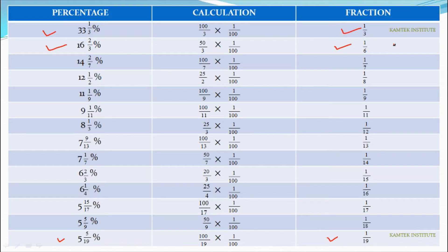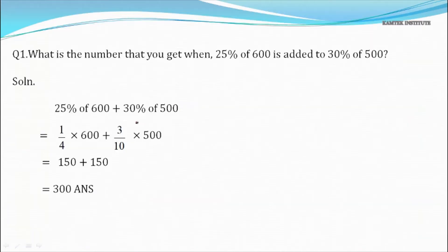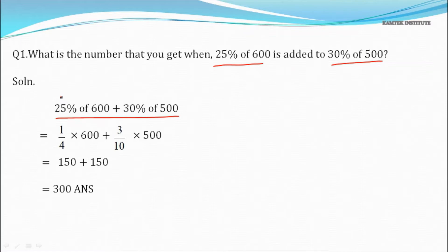We move to Question 1: What number do we get when 25% of 600 is added to 30% of 500? So we need to calculate 25% of 600 plus 30% of 500. From the table, 25% equals 1/4, so it becomes 1/4 × 600, plus 30% of 500.